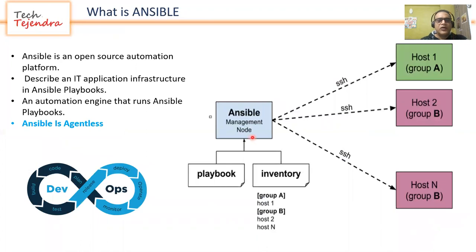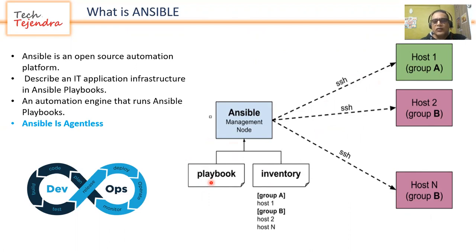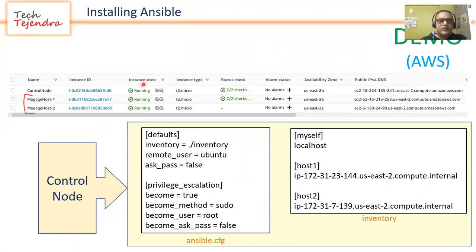Just a quick recap: Ansible is an automation tool. In our example environment, we have a control node which makes an SSH connection to the managed hosts. The inventory is nothing but the list of all managed host machines. The playbook defines the rules — the commands and configuration we want applied to the managed hosts.